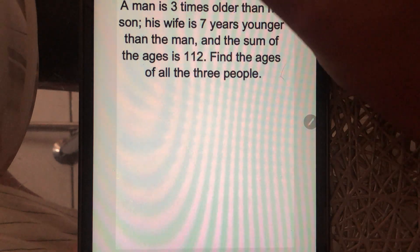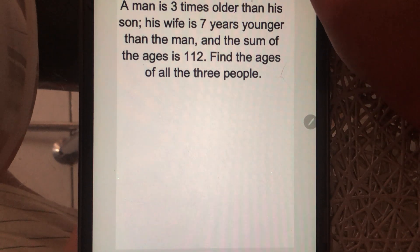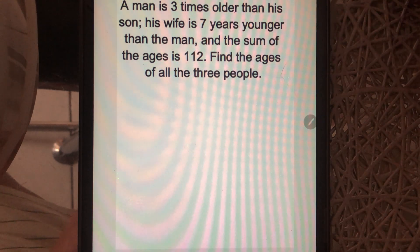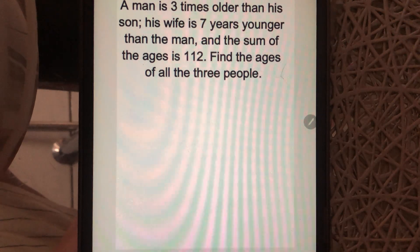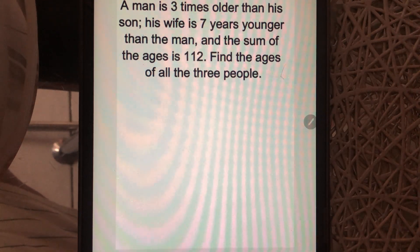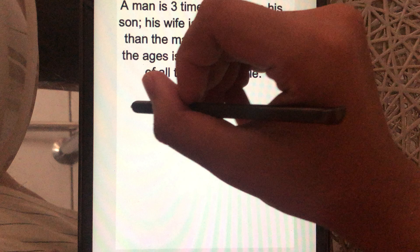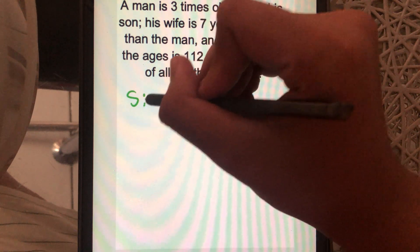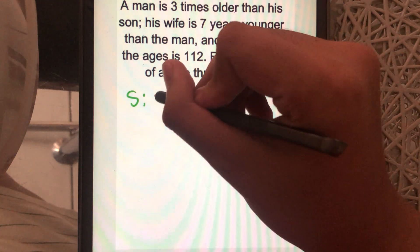So a man is three times older than his son, and then his wife is seven years younger than him. So the one without a condition is his son. So you can put here S as in his son. You can put X.